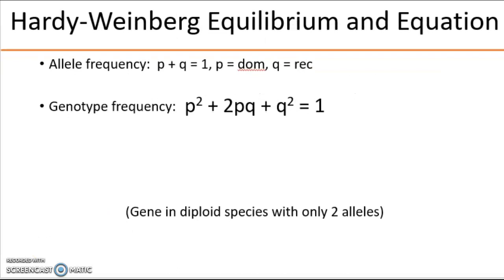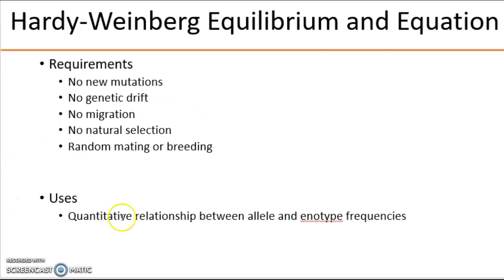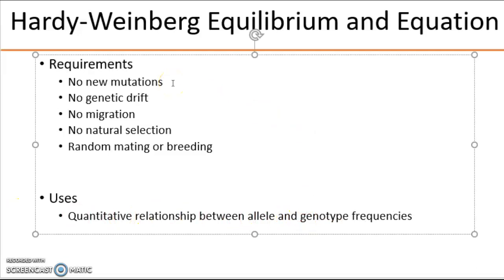This is important because you can use it for Hardy-Weinberg. Hardy-Weinberg established that if you know the allele frequencies, you can calculate genotype frequencies, using P for dominant and Q for recessive. All alleles P plus Q should equal 1. The equation becomes P² (homozygous dominant) + 2PQ (heterozygous) + Q² (homozygous recessive) = 1. This applies to diploid individuals with two alleles only, and assumes no new mutations, no genetic drift, no migration of organisms in or out, no natural selection, and random mating. Those are the requirements for Hardy-Weinberg to be true.